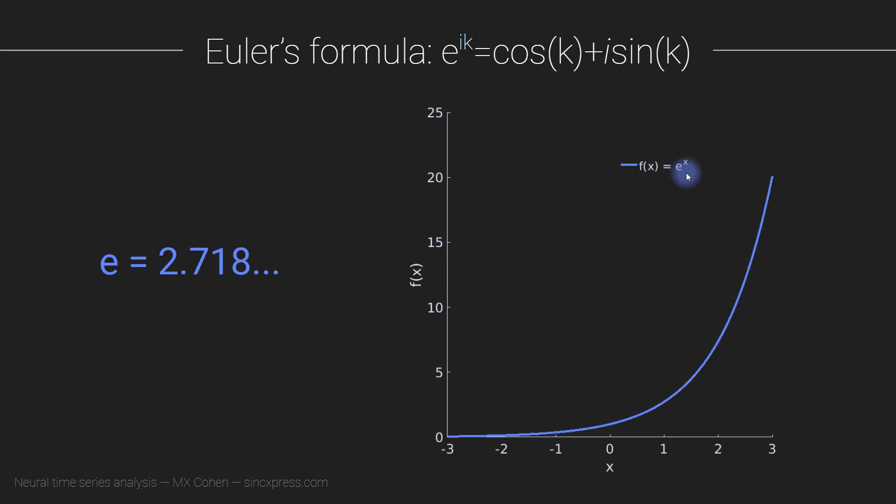So this is a function that goes up to infinity. It climbs up to infinity really, really fast, and as it goes up to the right, so for positive values of x. For negative values of x, it's pretty interesting.